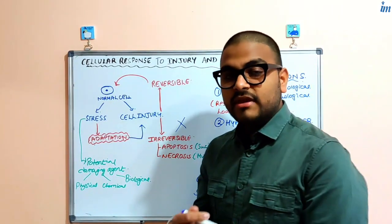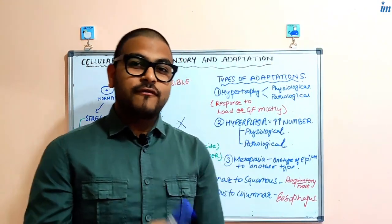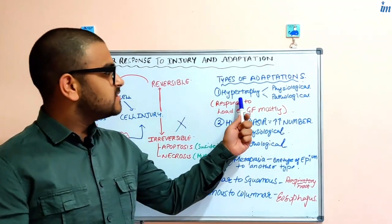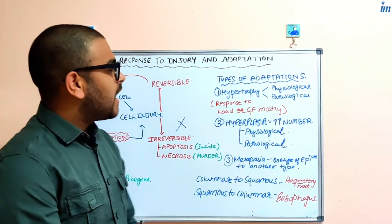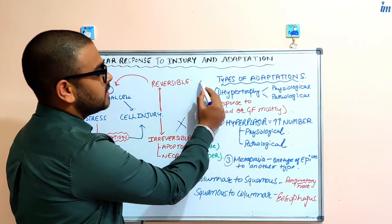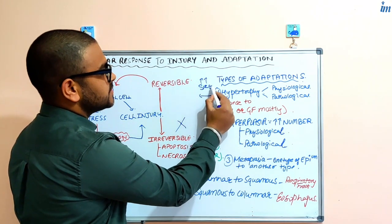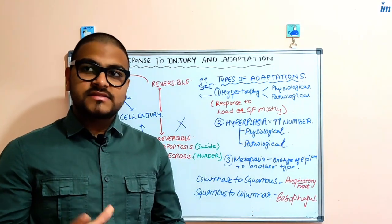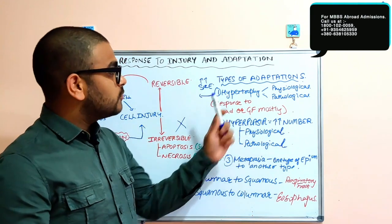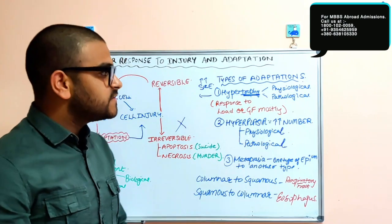We will have discussion of four types of adaptations. The first type is hypertrophy. Hypertrophy you can define as increase in the size of cell and not the number of cells. When it is hypertrophy, it means increase in the size of cell.